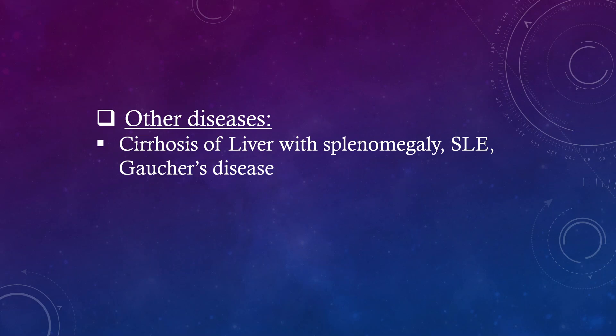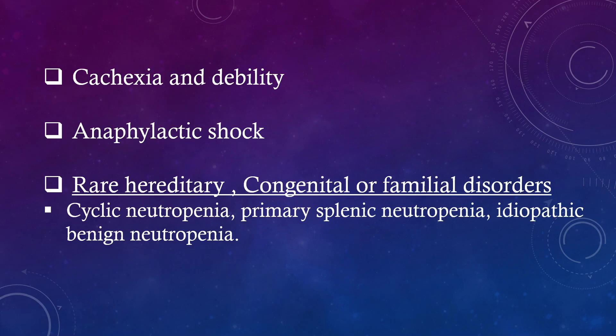Other diseases: cirrhosis of liver with splenomegaly, SLE, Gaucher's disease, cachexia and debility, anaphylactic shock, and rare hereditary congenital or familial disorders like cyclic neutropenia, primary splenic neutropenia, and idiopathic benign neutropenia.